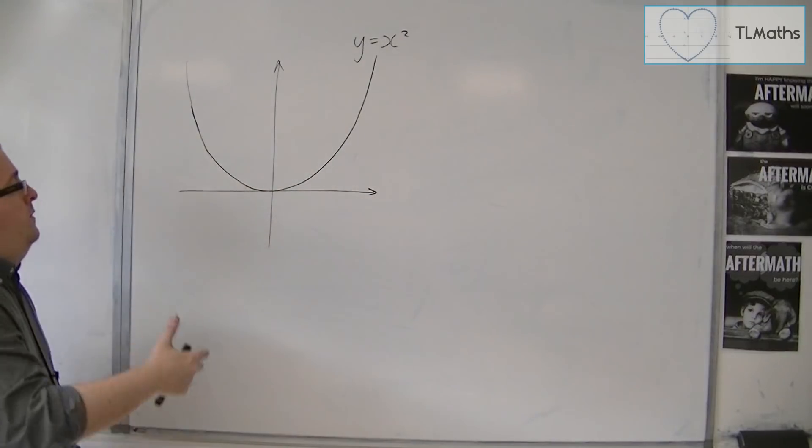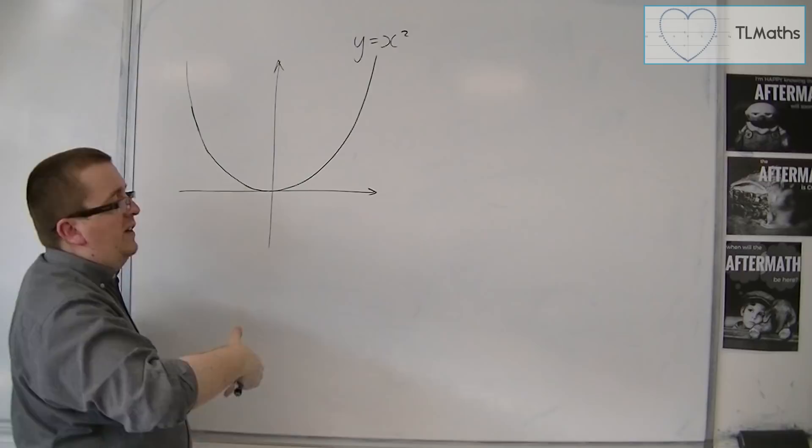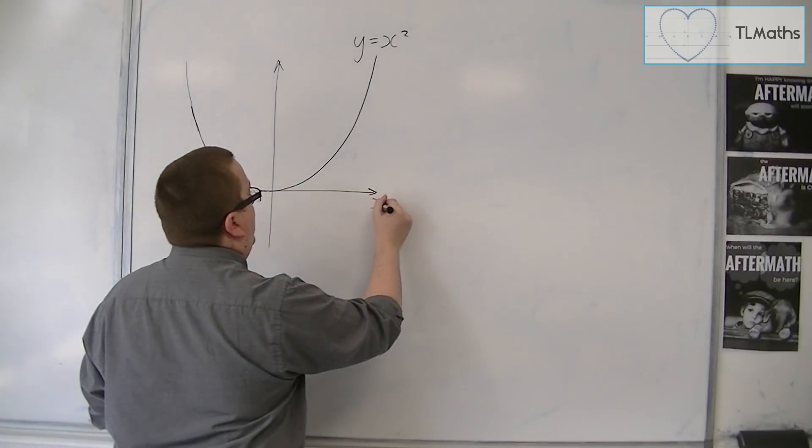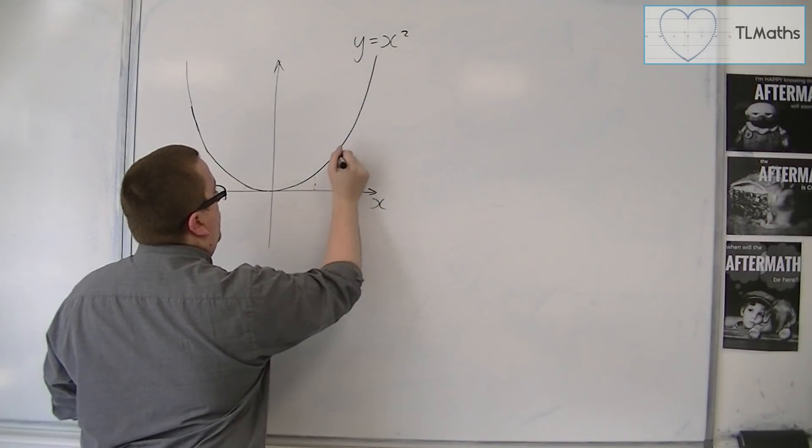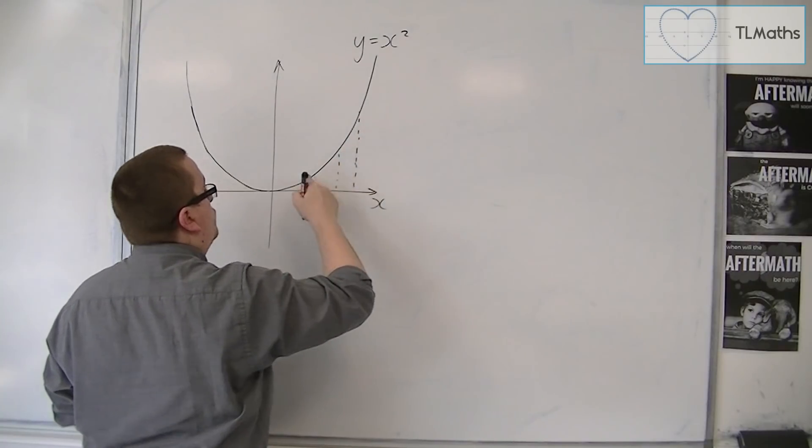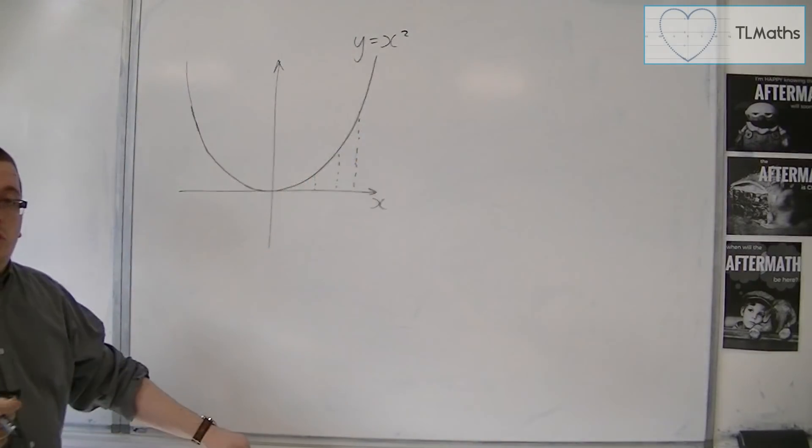So the gradient of the curve depends on where you are along the x-axis. Because if I choose a point there, or there, or there, you can see that the gradient is increasing at each point.